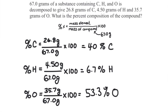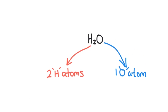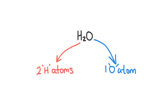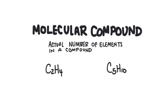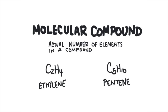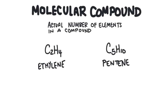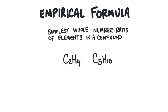Percent composition isn't a formula. A chemical formula shows the ratio of elements within a chemical compound, like H2O — two hydrogen for every one oxygen. There are two kinds of chemical formulas. The molecular formula shows the actual number of elements: C2H4 is ethylene with two carbons and four hydrogens, and C5H10 is pentene with five carbons and ten hydrogens. These compounds share the same ratio of carbon to hydrogen — for every one carbon, there are two hydrogens. The simplest whole number ratio of elements is called the empirical formula: for both ethylene and pentene, it's CH2. If we know the percent composition, we can determine the empirical formula, and if we know the empirical formula and the molar mass, we can determine the molecular formula.